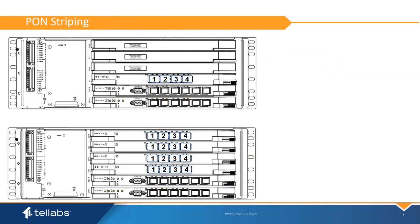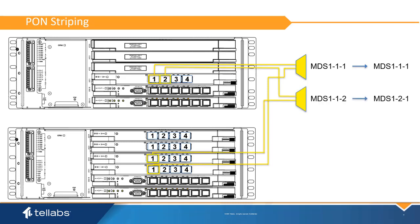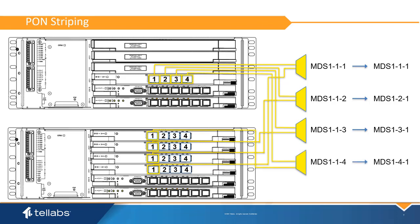To ensure optimal failover speeds, it is recommended that protected Ponds be paired in such a way to stripe the pairs across multiple Pond cards. This will minimize the time needed to recover the link by sharing the load across four Pond card processors. This example illustrates striping with a QIU-7 card, but the scheme also applies to the OIU-8.